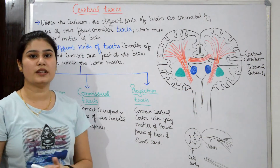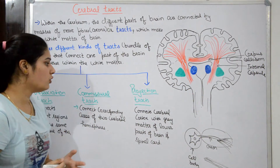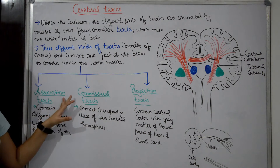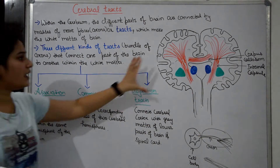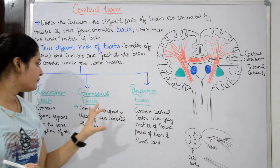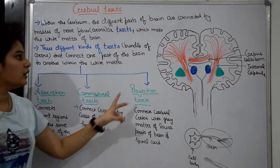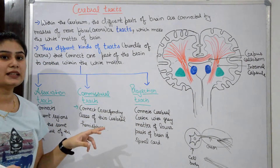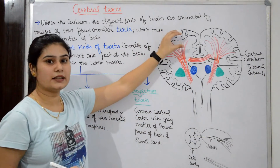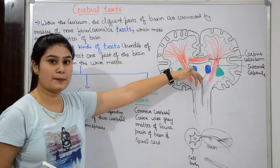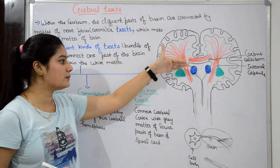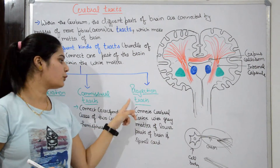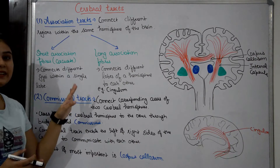So the difference is: association tracks connect different parts of one hemisphere; commissural tracks connect both hemispheres; and projection tracks connect the outer cortex with deeper brain structures like the thalamus, hypothalamus, brain stem, and spinal cord. Now we will study the details.